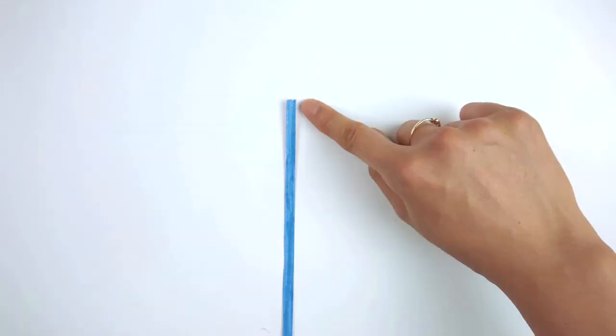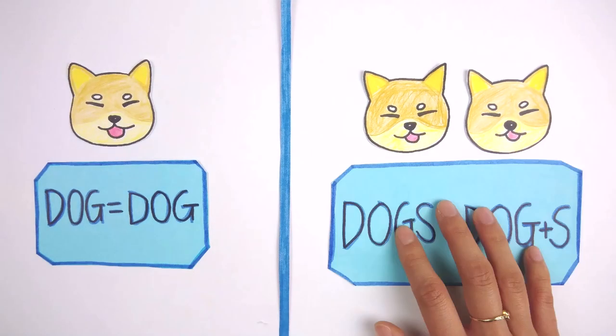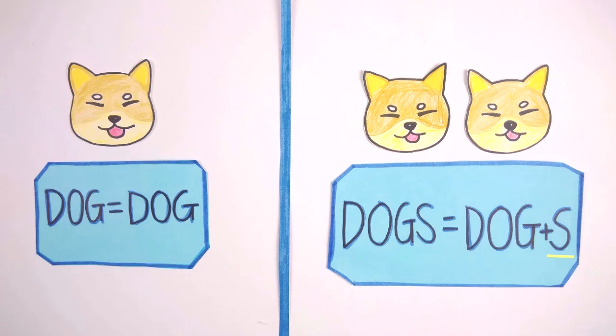For example, in English, the singular and plural forms of DOG and DOGS both have only one word. The difference is the singular noun DOG is constructed from one morpheme, while the plural noun DOGS is made up of two morphemes: DOG and the plural morpheme S.